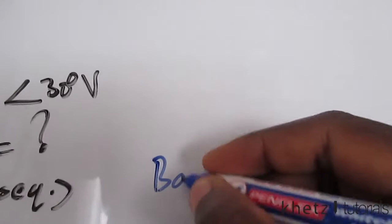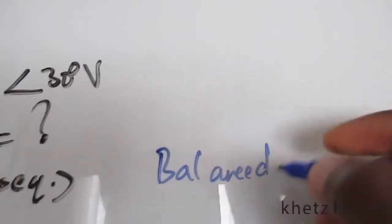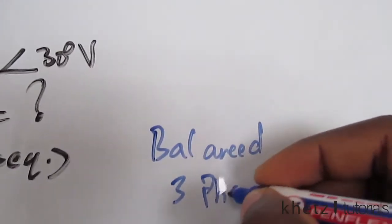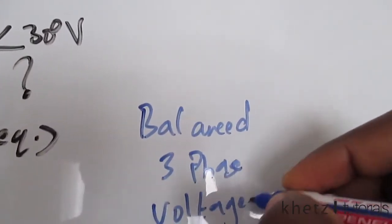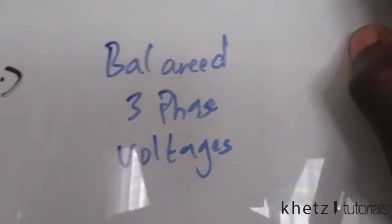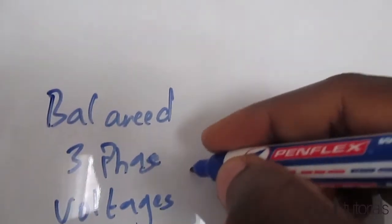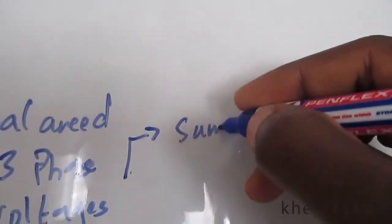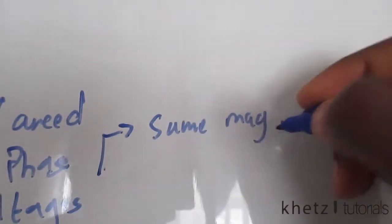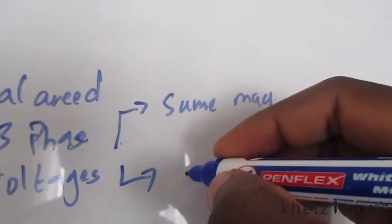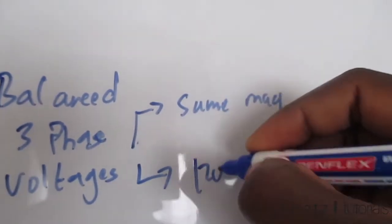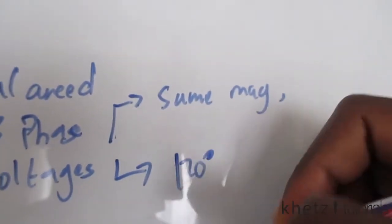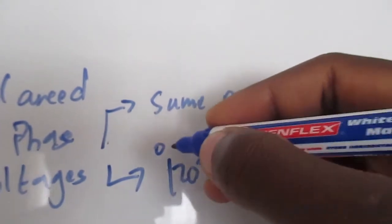We're dealing with balanced three phase voltages, and these balanced three phase voltages have the same magnitude and are out of phase with each other by 120 degrees.